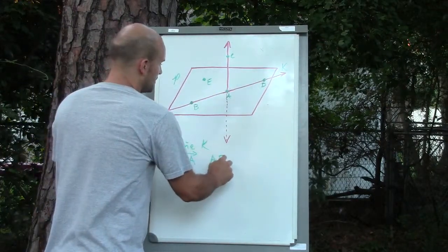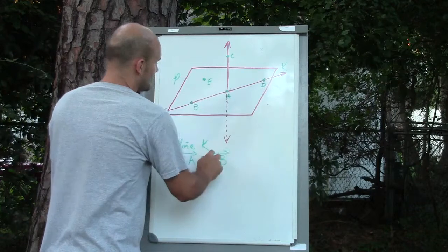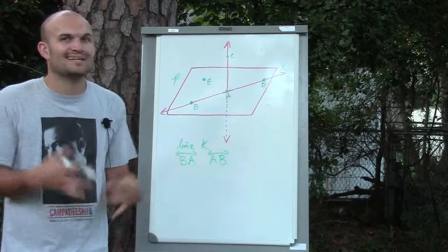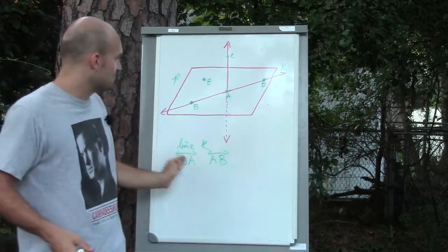matter what order I represent that, because the line is infinitely long. So the direction of how you label it doesn't matter - we could call this line BA